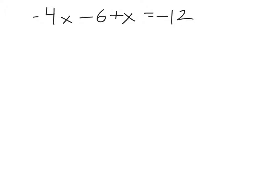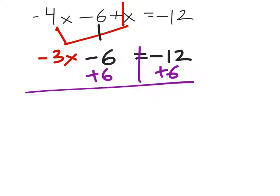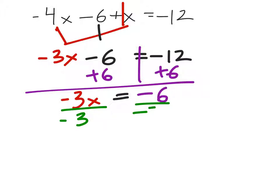From here, combine like terms on the left side of the equal sign. Negative 4 plus 1x gives negative 3x, and we still have minus 6 equals negative 12. Then add 6 to both sides, giving negative 3x equals negative 6. Dividing both sides by negative 3, we get x equals 2.